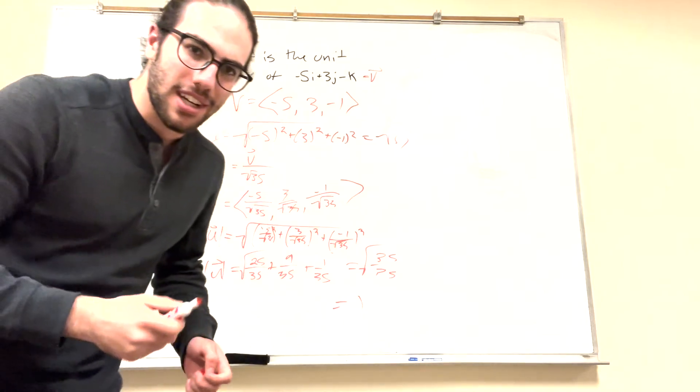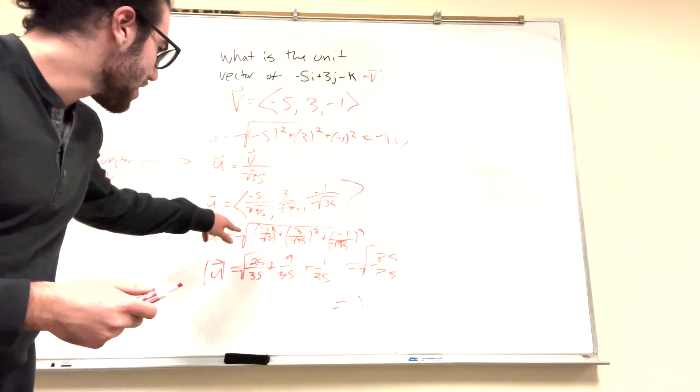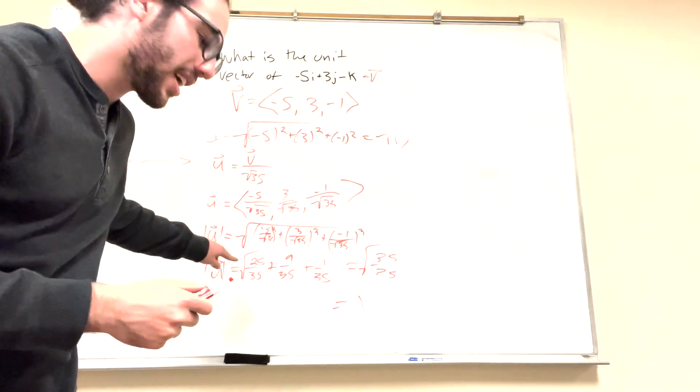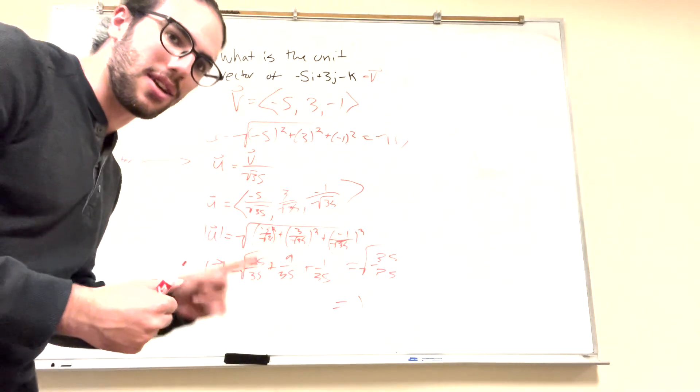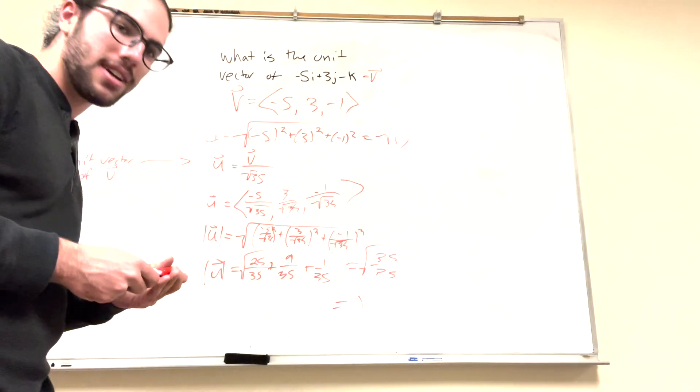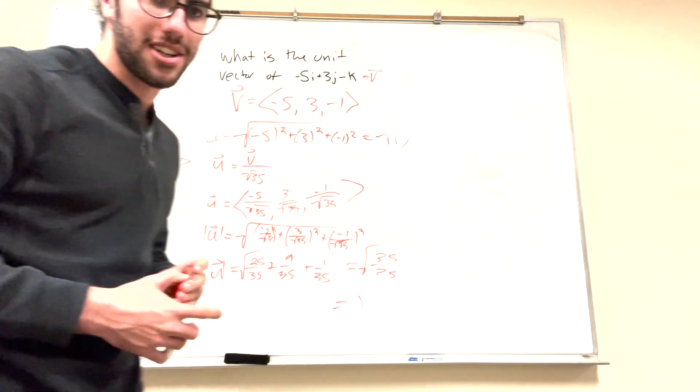So, if you ever have these problems and you're not sure about your answer, what you can do is just find the distance of it, the magnitude of your unit vector, and it should just give you 1. And if it's a 1, that means you've got a unit vector, and it's correct. So yeah, that's how you do this kind of problem. And good luck on your calculus homework, guys.